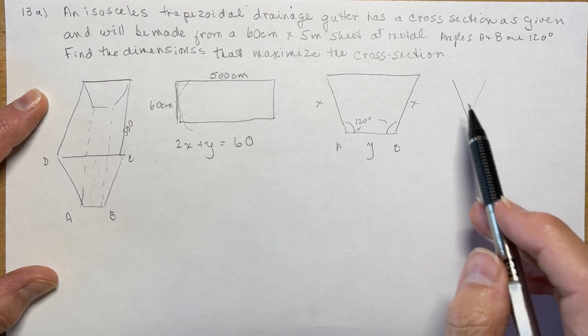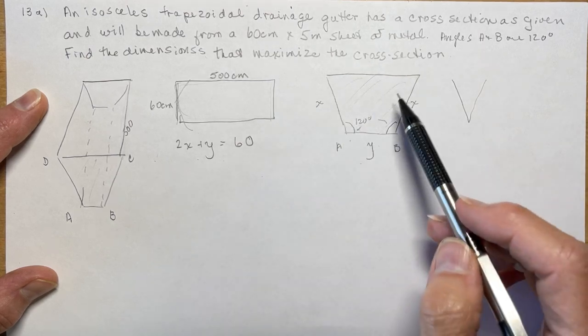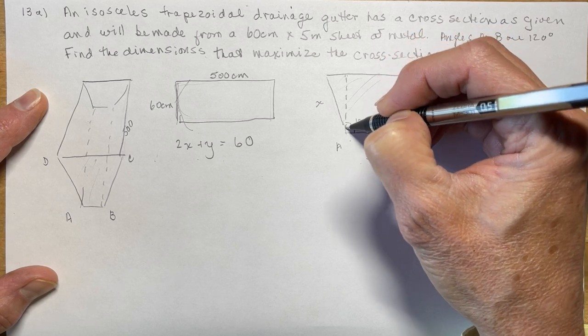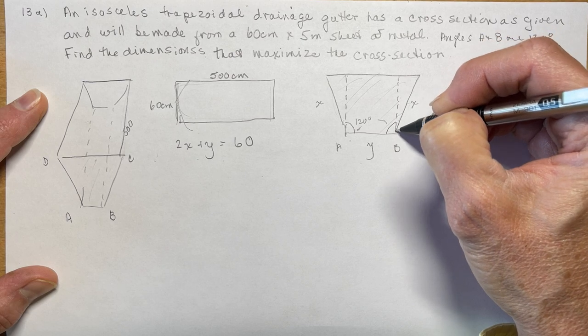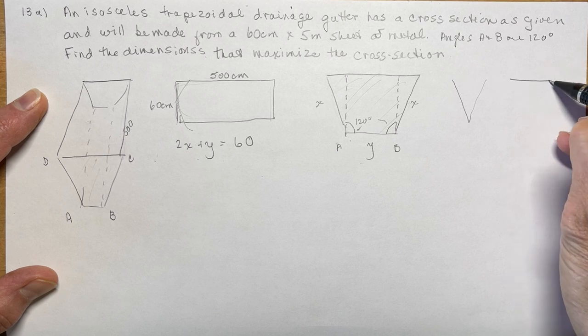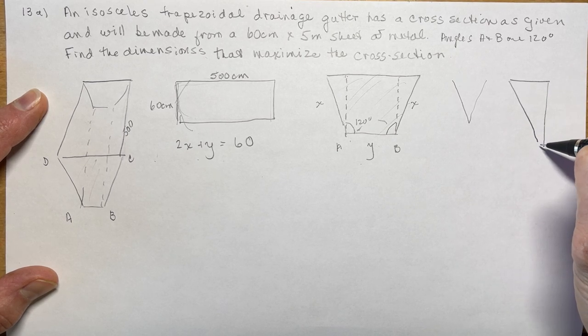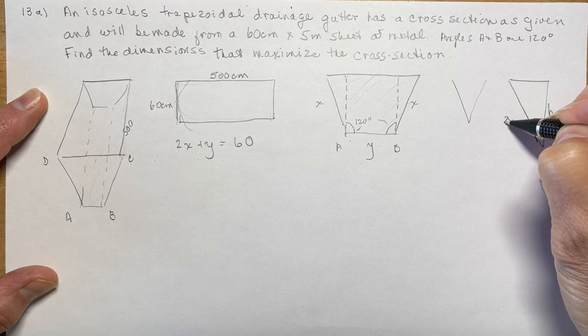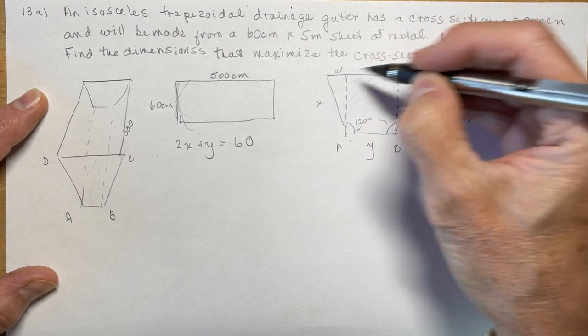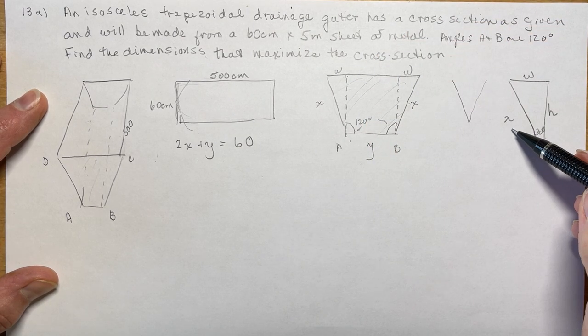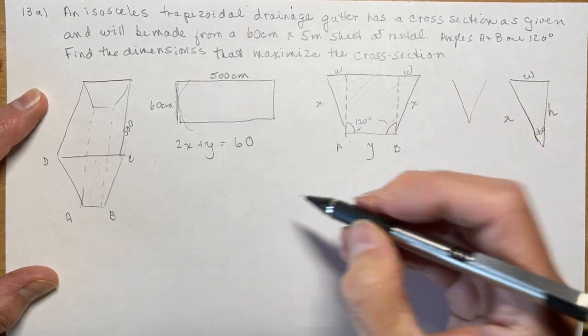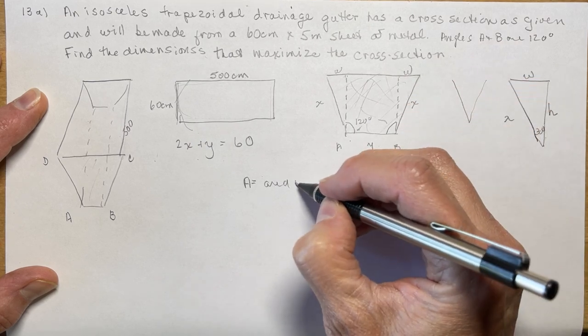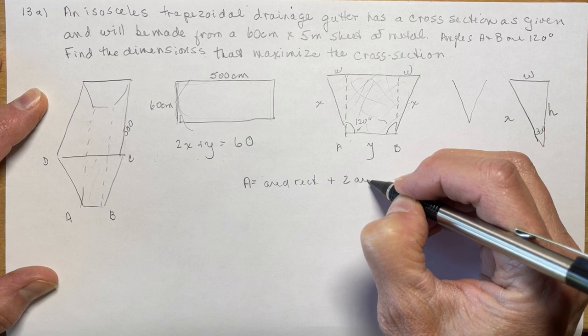Now what we need to do is we're trying to maximize the cross-sectional area. So I need to know what is the area of this cross-section. First of all, what I have is two triangles. If I drop a perpendicular from here right down like that, I would have two triangles.